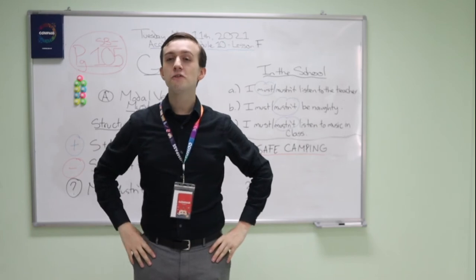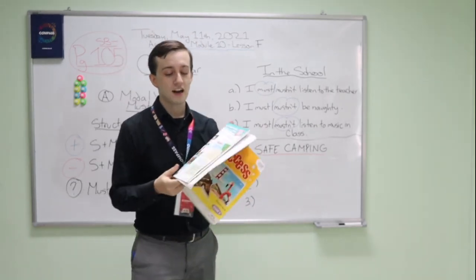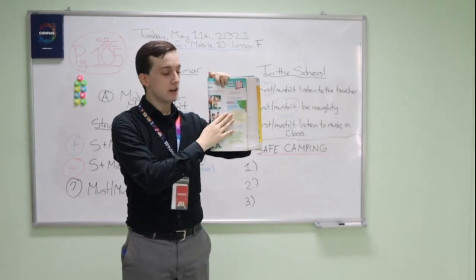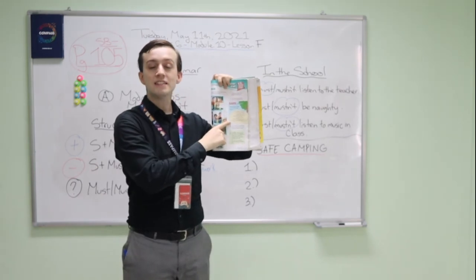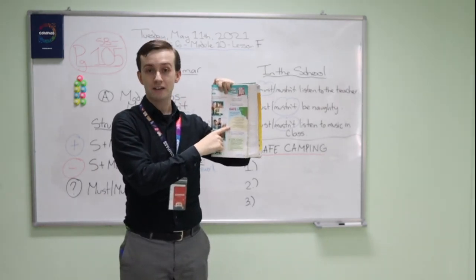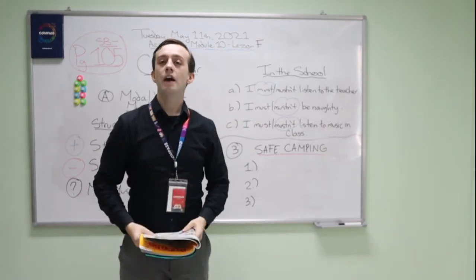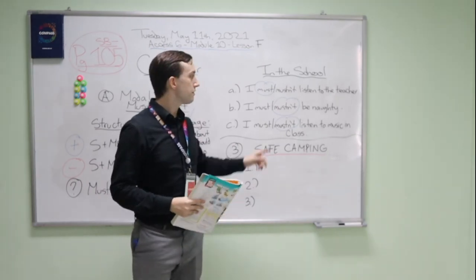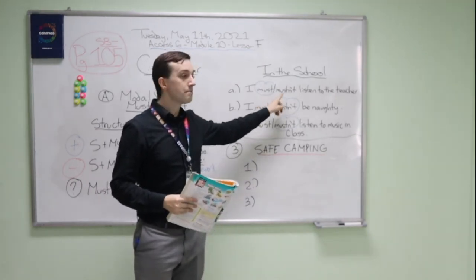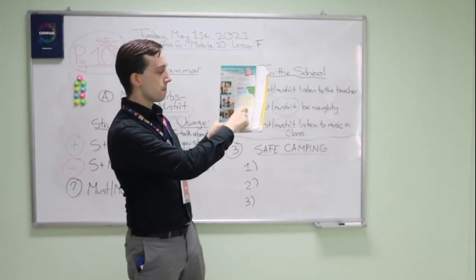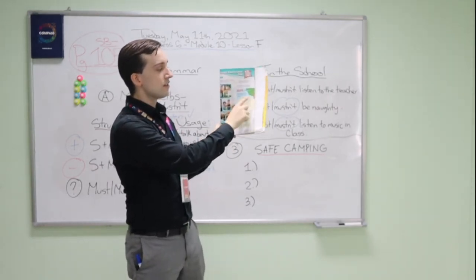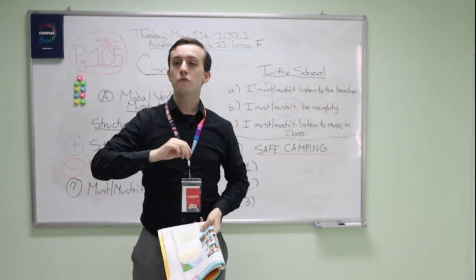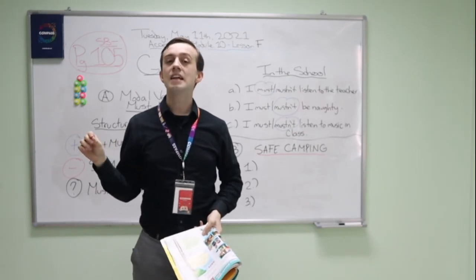Now look at exercise three in your student book. There are some sentences about camping — safe camping. I want you to write three sentences with must and mustn't about these sentences. Write the sentences in your notebook.